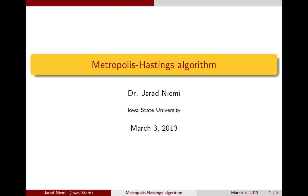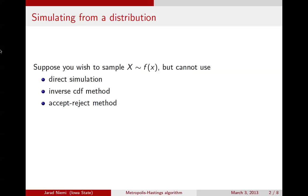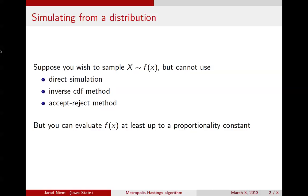This is Jared Nimi with a mini-lecture on the Metropolis-Hastings algorithm. Previously, we've talked about a desire to sample from a particular distribution whose density is f, and we've mentioned a few different methods. The first is that if f is a known density, we can simulate it directly. If not, and we can find its CDF and the inverse of its CDF, then we can use the inverse CDF method. We also talked about the accept-reject method, where we create an envelope around the target density f. If we cannot use one of these methods, but we can at least evaluate f(x) up to a normalizing constant, then we can use the Metropolis-Hastings algorithm.